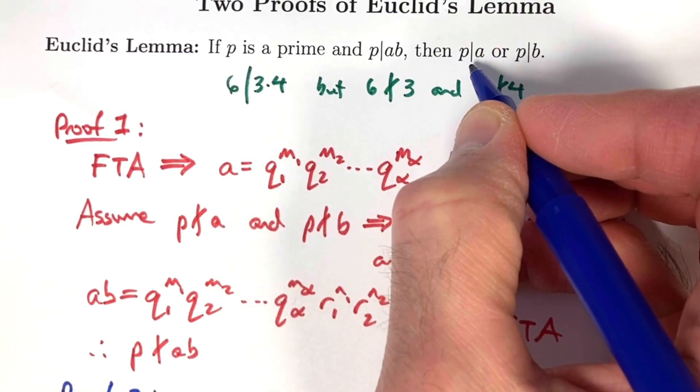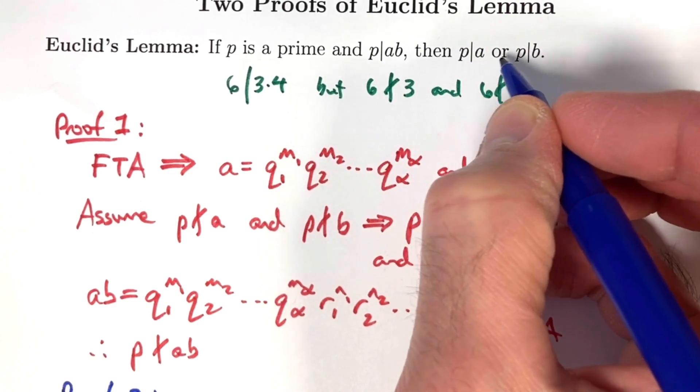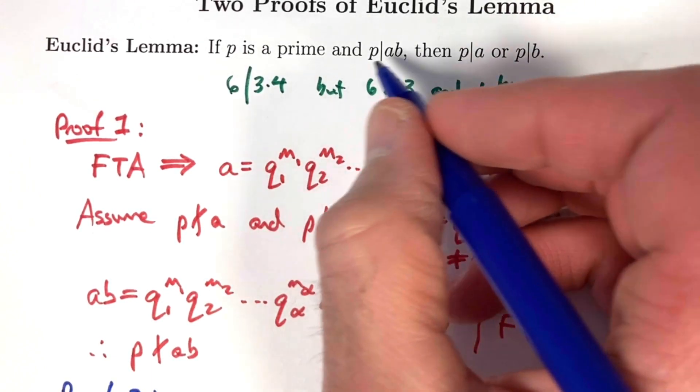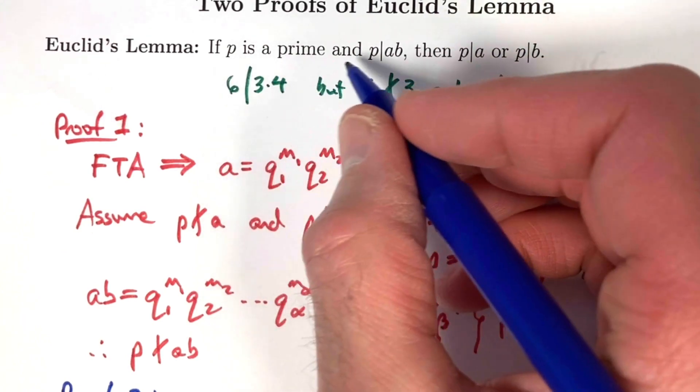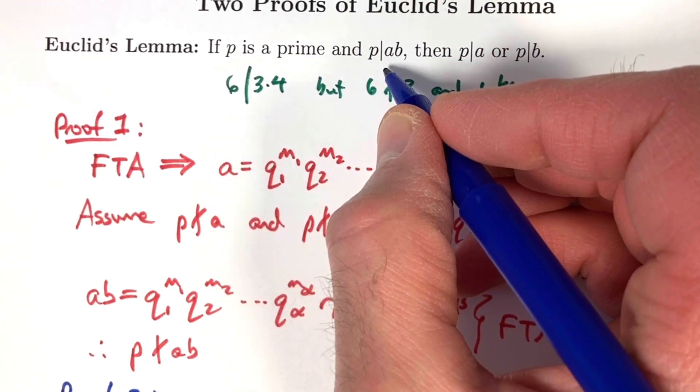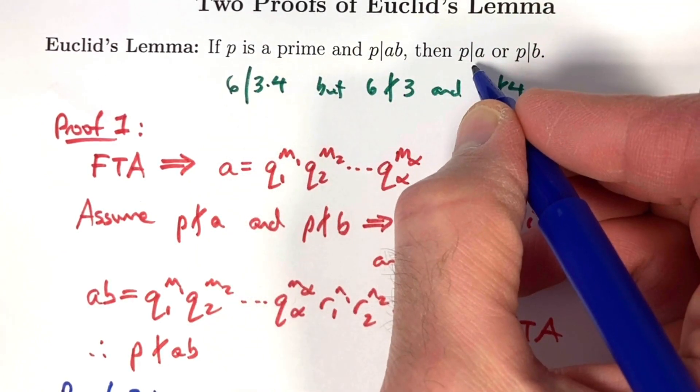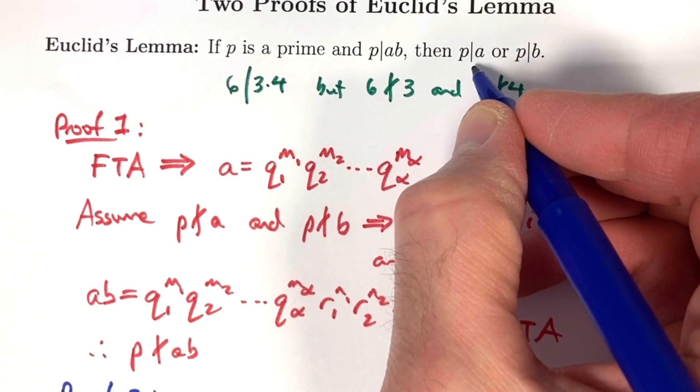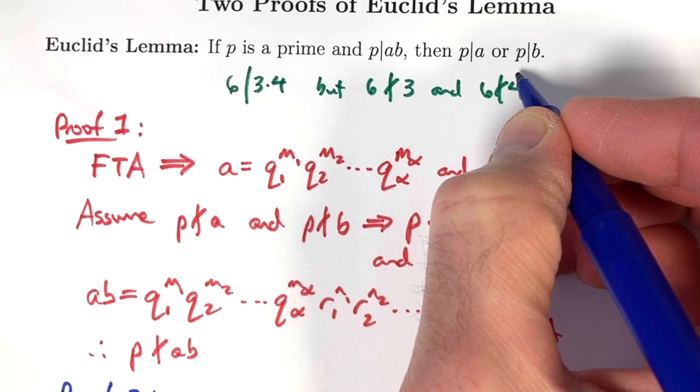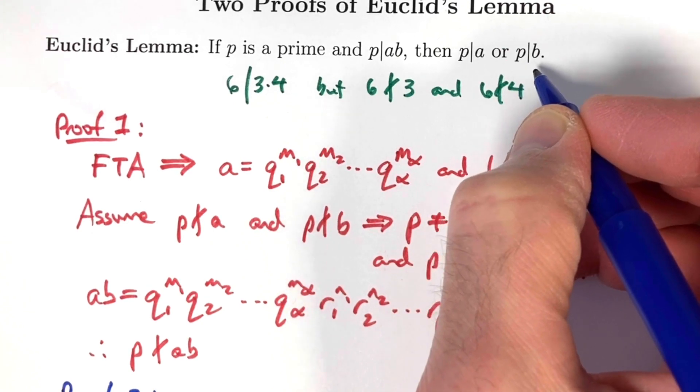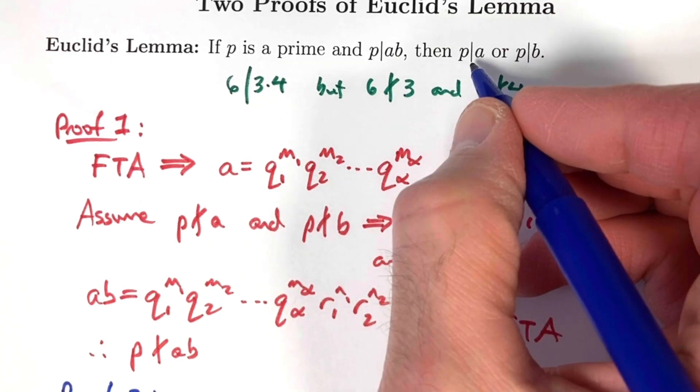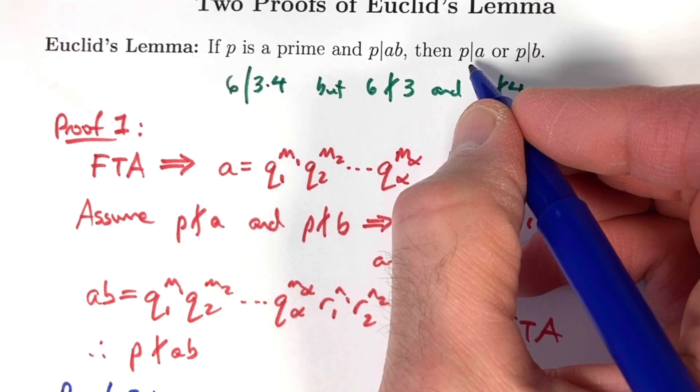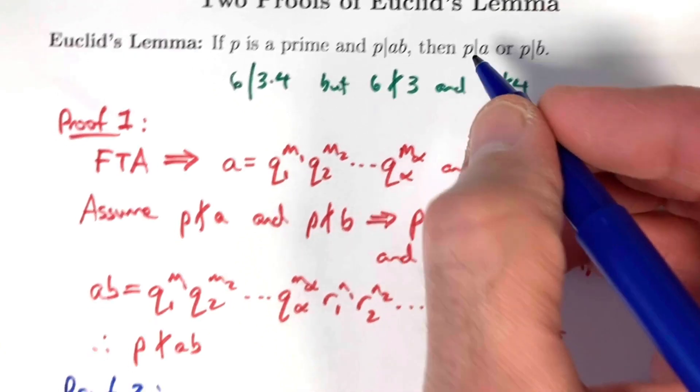The fact that the conclusion is in the form of an or statement means it's a little funny. We're going to go ahead and assume p is prime and that p does divide a times b. And without loss of generality, we're going to assume the opposite of this one, that p does not divide a, and we'll show that it follows that p divides b.